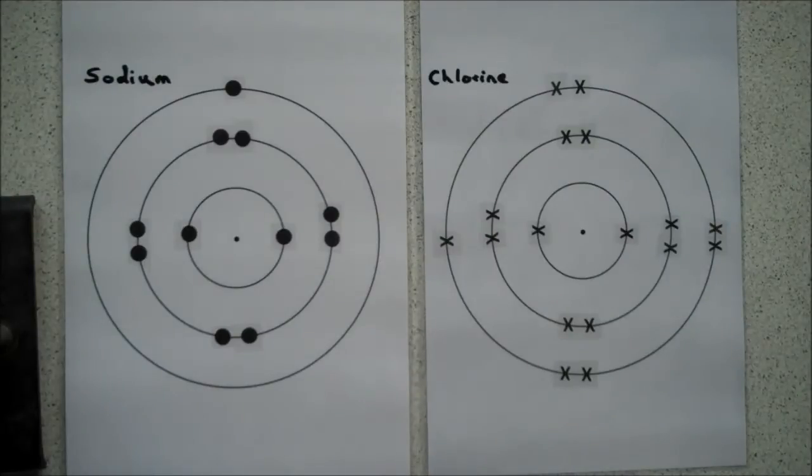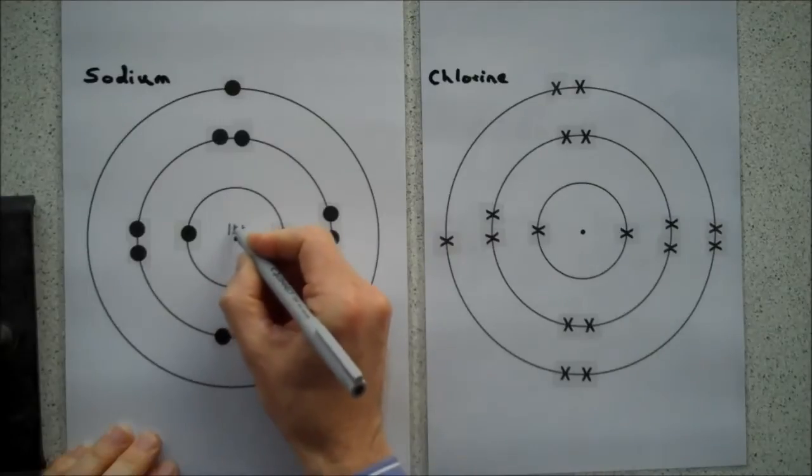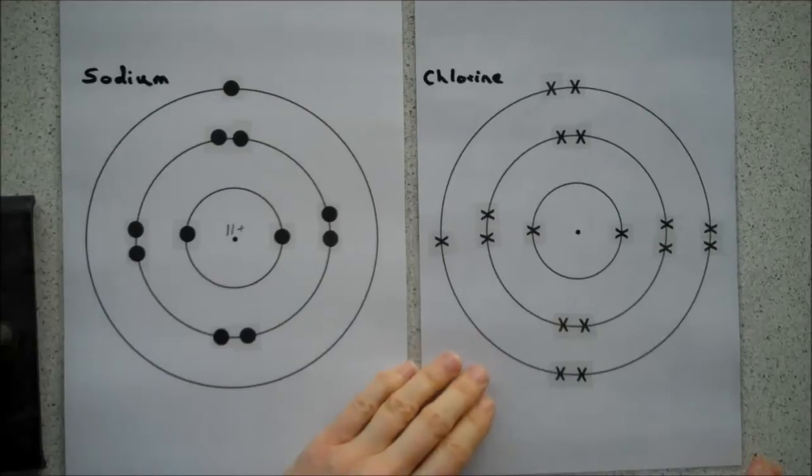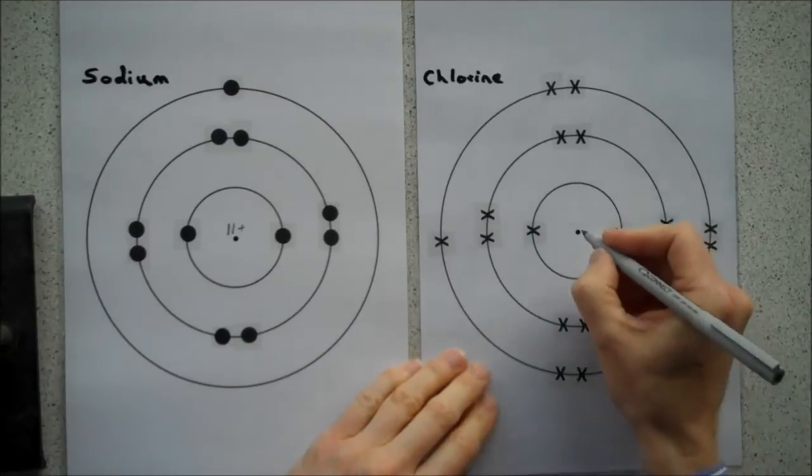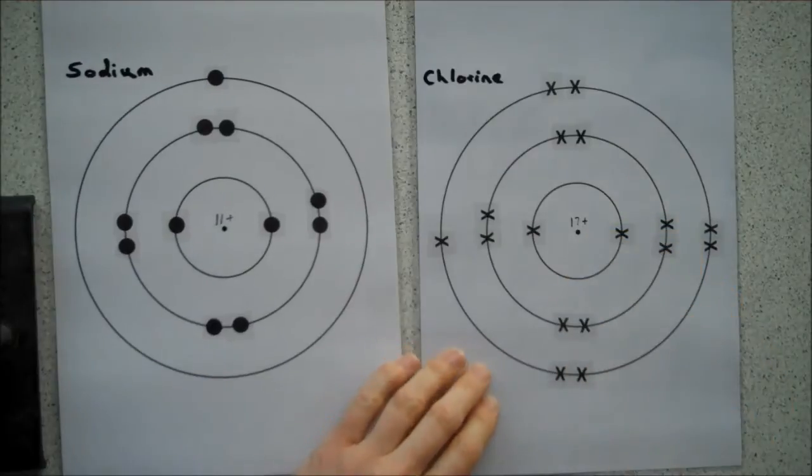First of all, you need to know about the electrons in the shells for both sodium and chlorine. Sodium is element number 11. That means it's got 11 protons, so the nucleus has a charge of 11 plus. And chlorine has 17 protons, atomic number 17, so it has a charge of 17 plus on its nucleus.